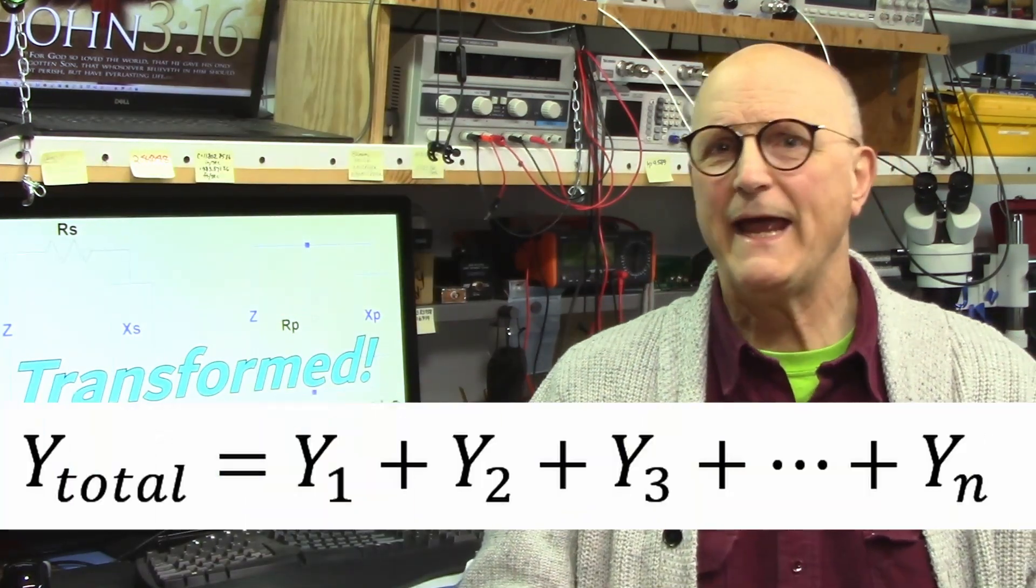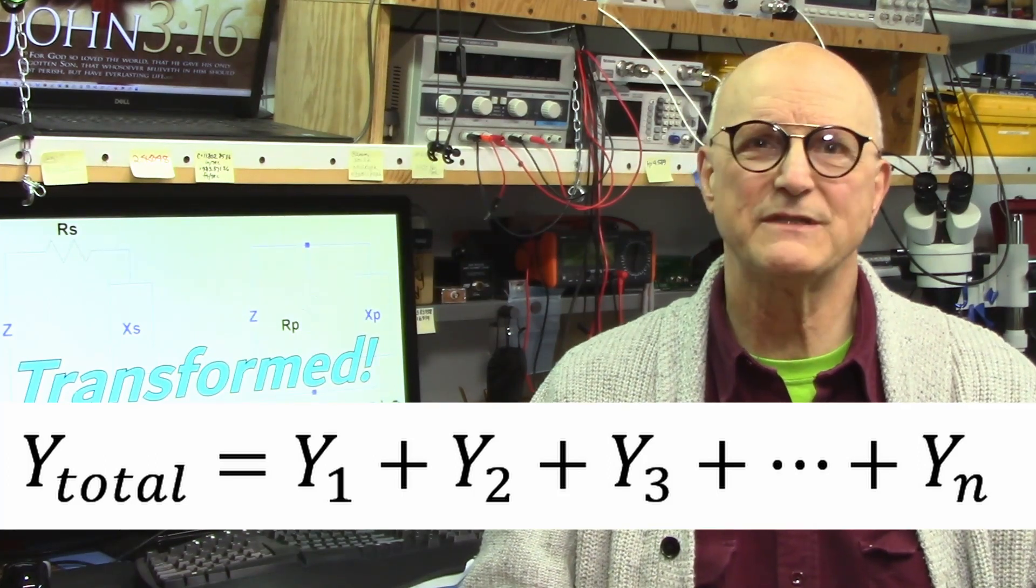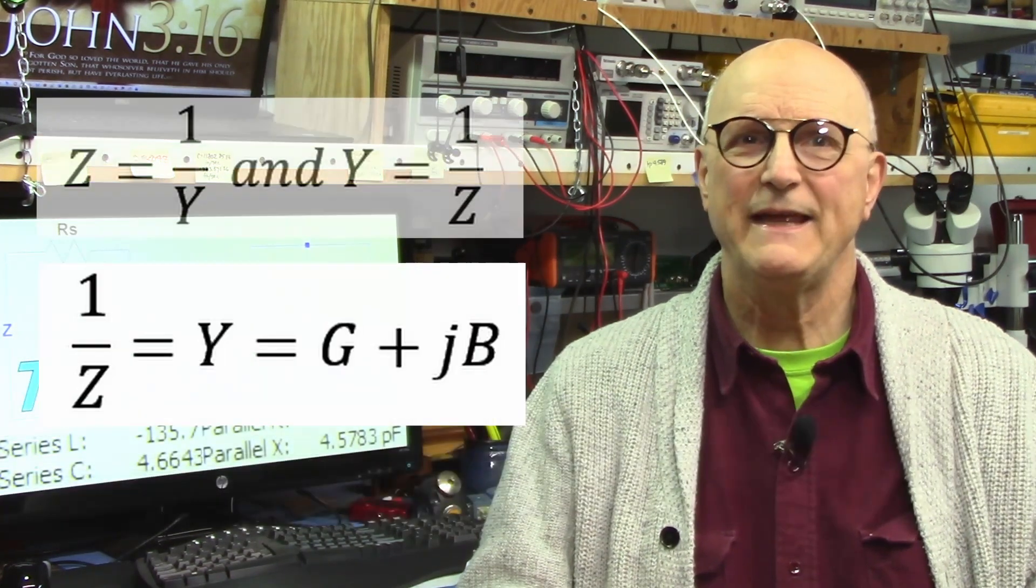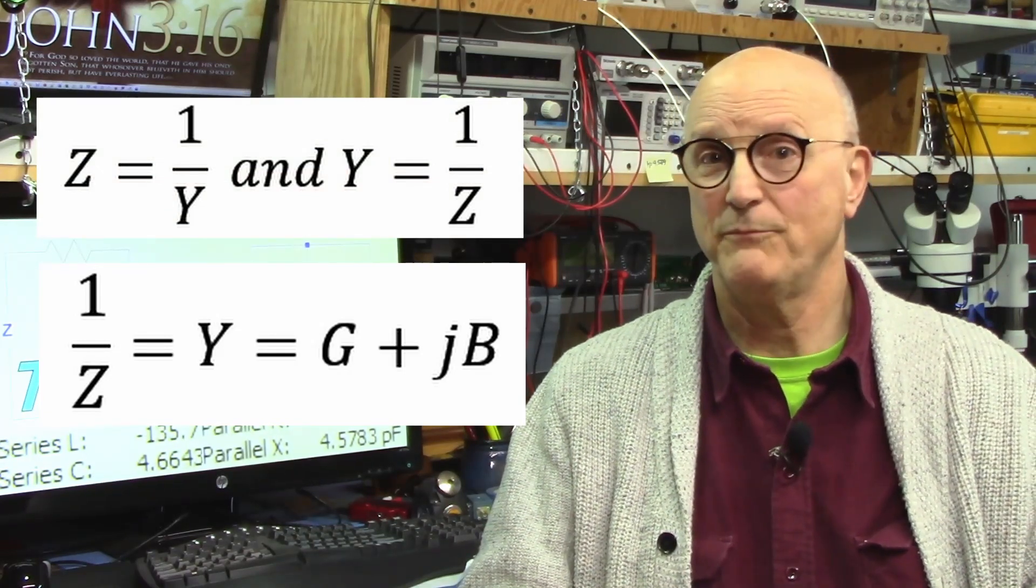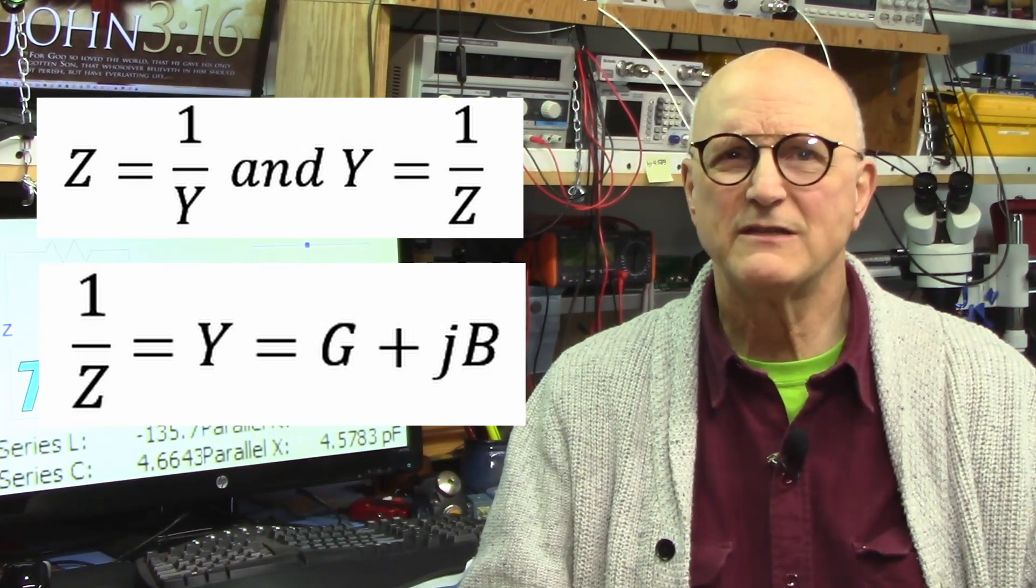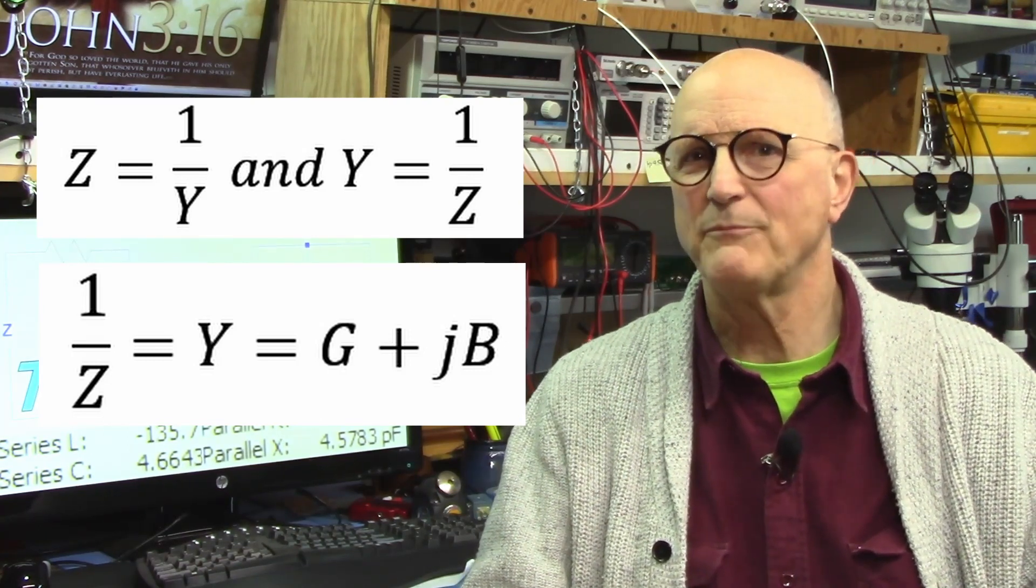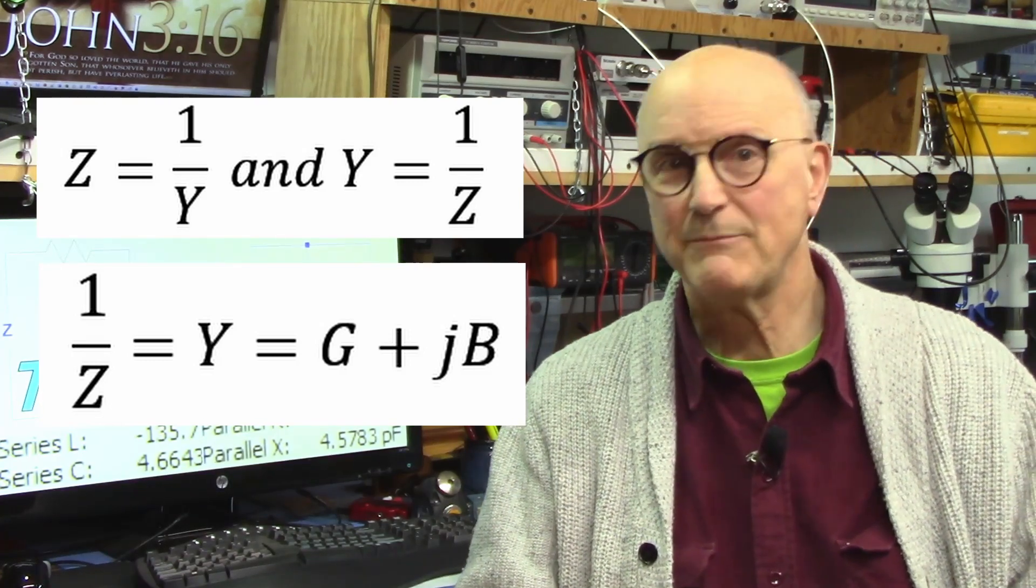So B is equal to 1 divided by X. When we have impedances in parallel, we can add their admittances just like we added the conductances of resistors in parallel. In the same way, if we divide 1 by the total impedance, then we end up at the sum of the two conductive aspects that make up the impedance, the conductance and the susceptance, thus the previously mentioned Y equals G plus jB.